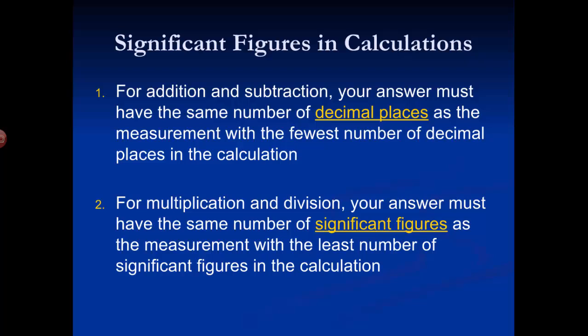For multiplication and division, it's a little different. Your answer has to have the same number of significant figures as the measurement with the least number of significant figures in the calculation. You count the sig figs in each measurement you're multiplying or dividing, and whichever one has the fewest, that's the number of sig figs you round your answer to.